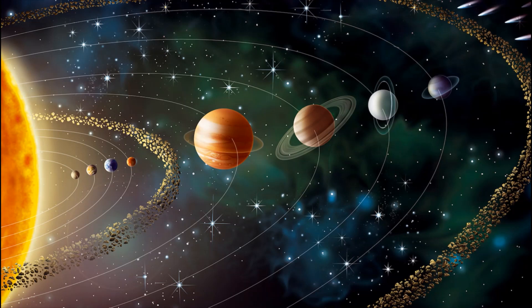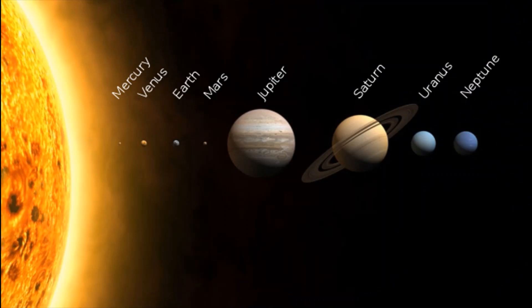Do you know the names of the planets? Let us see the names of planets. Mercury, Venus, Earth, and Mars are the inner planets. And Jupiter, Saturn, Uranus, and Neptune are the outer planets.